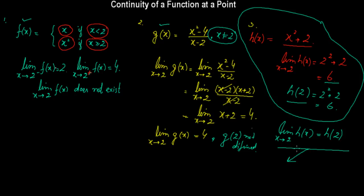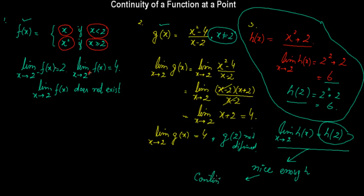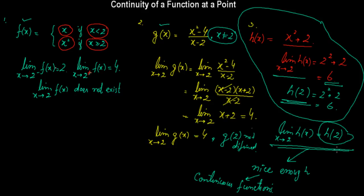Such functions — where the limit at a point exists and equals the function value at that point — we call nicely behaving functions, or nice enough functions, and they are also known as continuous functions. For a function to be continuous at a point, the limit at that point must exist, the function must be defined at that point, and the limit must equal the function value.